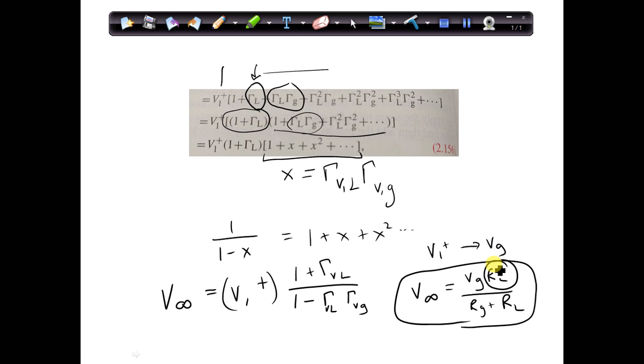That is, this equation is just a voltage divider with the load impedance connected directly to the generator. In other words, the transmission line's characteristic impedance, Z naught, has no effect on the steady state values. If you let enough time elapse, the steady state voltage on the transmission line is the same voltage as if you would have the load connected directly to the generator.